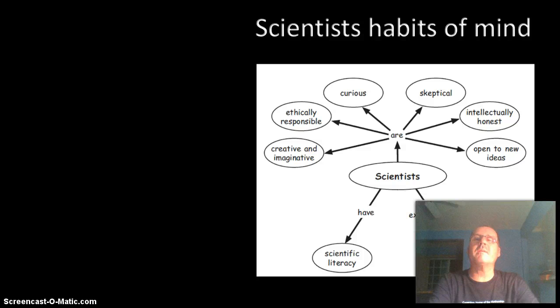So today we're going to learn about the Scientists' Habit of Mind and they are creative and imaginative, ethically responsible, curious, skeptical, intellectual honesty, and open to new ideas. This concept map kind of lays it out. It's kind of good for you guys to take a look at it. It's in your textbook. Concept maps can really help you guys learn the material.